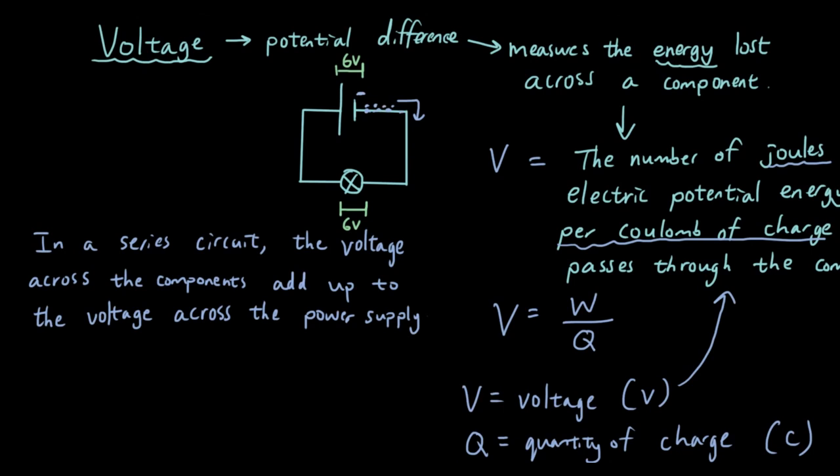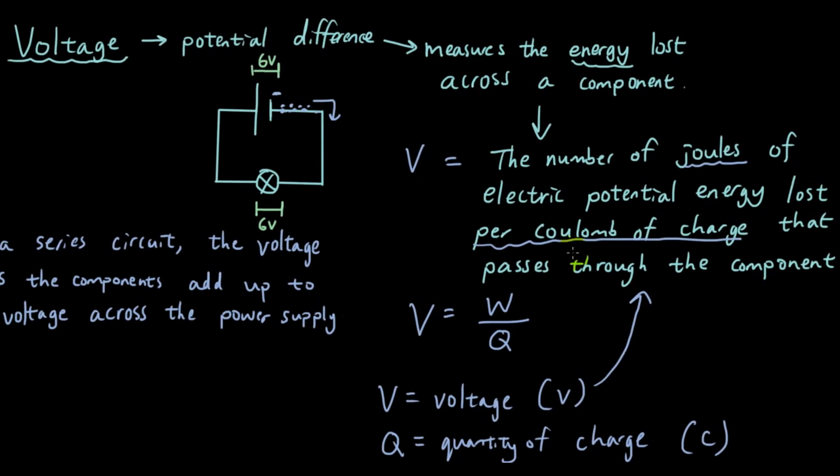So let's repeat that. This light bulb uses 6 joules of energy per coulomb of charge that passes through it. So what that means is, the power supply, which is in this case the battery, must supply 6 joules of energy per coulomb of charge, so that they can be consumed by the light bulb.